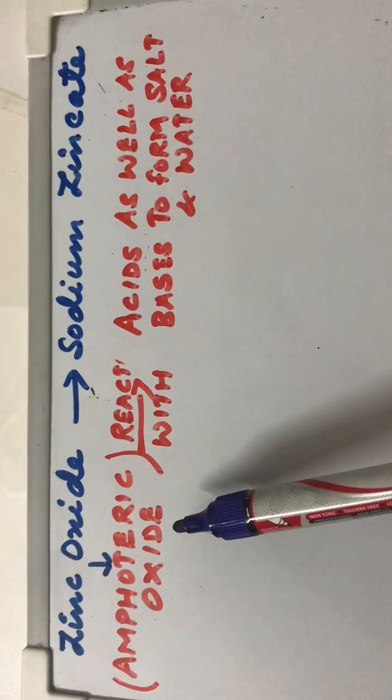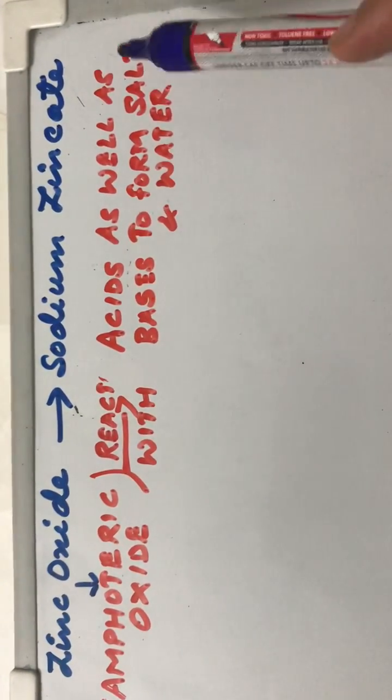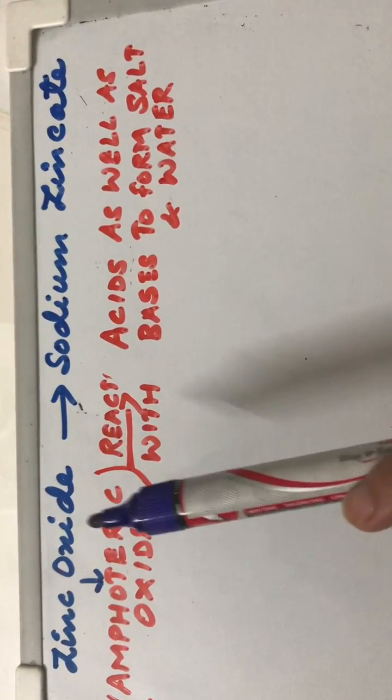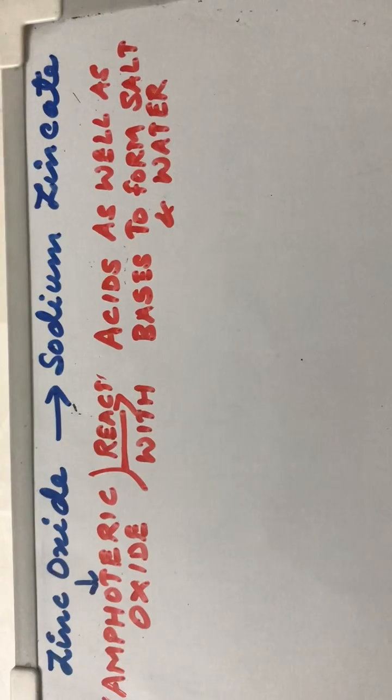Zinc oxide is basically an amphoteric oxide. That means an oxide that reacts with acids as well as with bases to form salt and water. That means the reaction of zinc oxide with acids and bases is also a neutralization reaction.